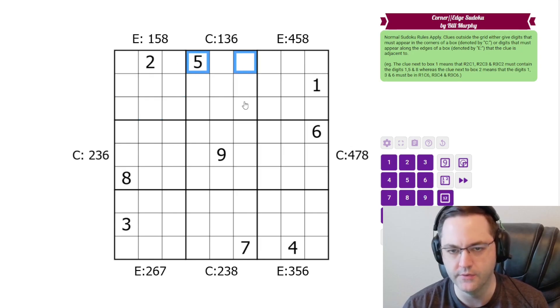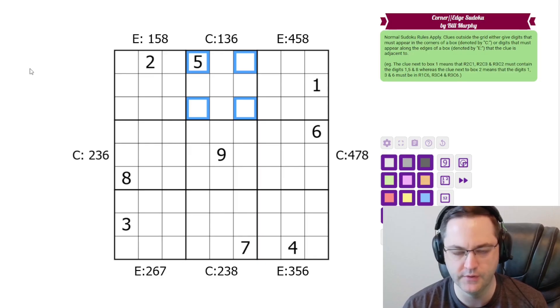Or the corner cells. So this clue is telling us that 1, 3, and 6 go in corner cells in this box. And those are the rules.